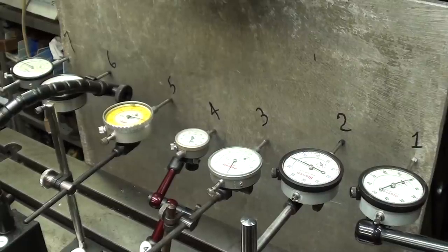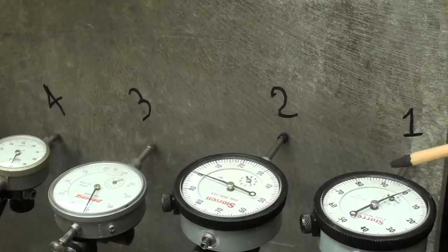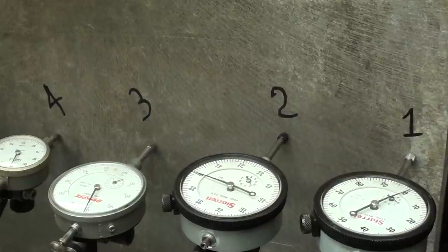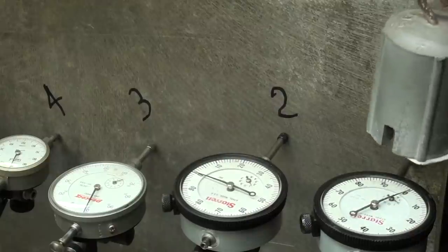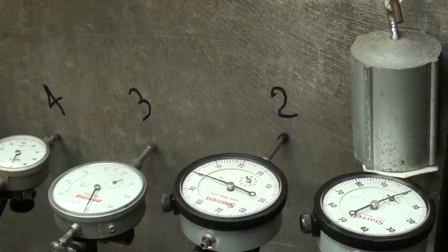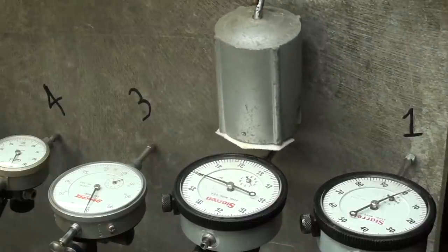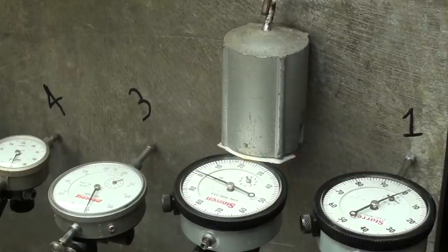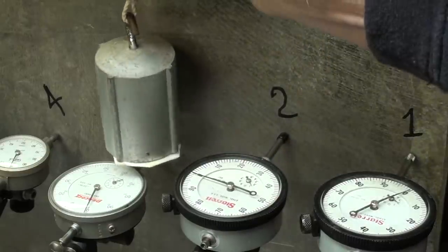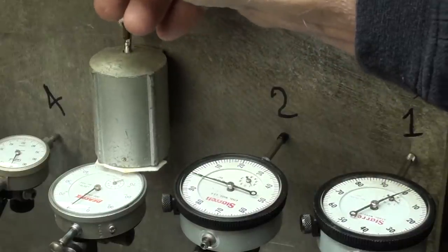Let's do it again with 500 grams. I understand leverage, and I do know that in some cases here I'm putting the weight just on the dial, and sometimes I was out here more on the stem. That probably makes a difference. 500 grams on one: half a thousandth. On two: one thousandth. On three, I expect a lot: four or five thousandths.